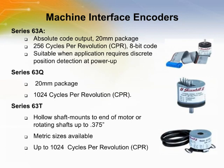In order to further penetrate the machine interface market, Greyhill now offers the following high-resolution products. The 63A is a 256 CPR absolute encoder — it outputs 256 unique codes per each 360 degrees of rotation. It is suitable for applications where the absolute position of the encoder must be known when the device is powered up.